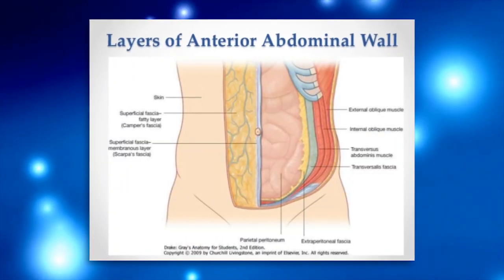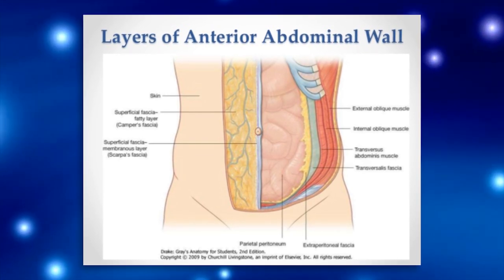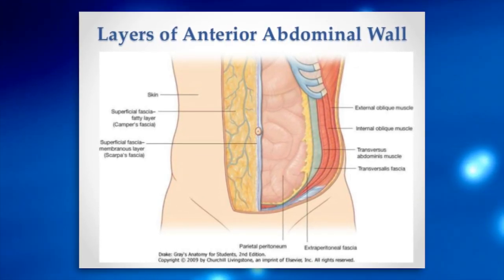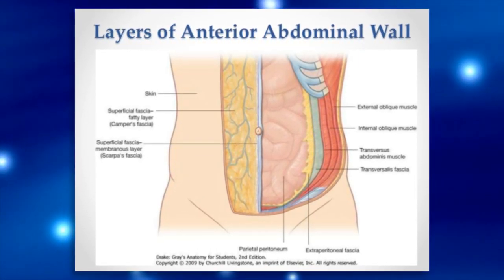So a hernia is basically an abnormal hole in the structure. In this case we're talking about the abdominal wall. When you have surgery, we cut through the abdominal wall or multiple layers of the abdominal wall. These strong layers of the abdomen hold all the contents of our bellies inside — the organs and things.